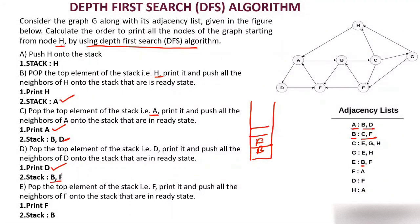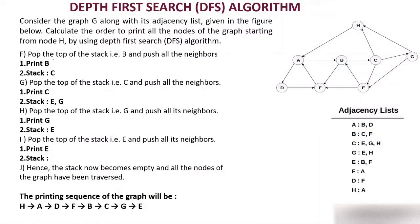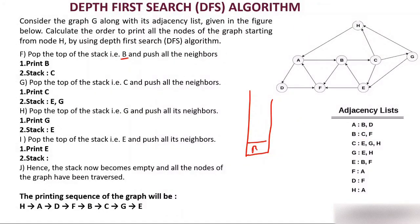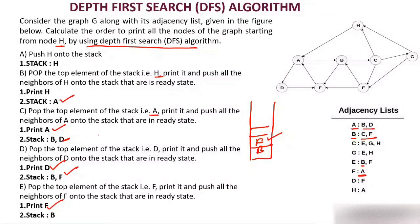Pop the top element F, print it, and push all neighbors of F. The neighbor of F is A, but A has already been processed, so we cannot insert it again — you cannot insert a node twice. Now only B is left in the stack. Pop B, print it, and push all its neighbors. The neighbors of B are C and F. Since F has already been processed, we do not insert F. We can insert C because it has not been processed yet.